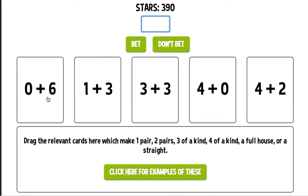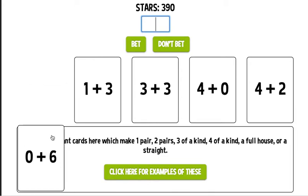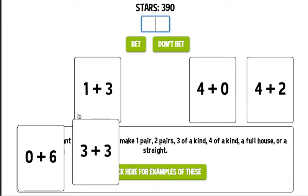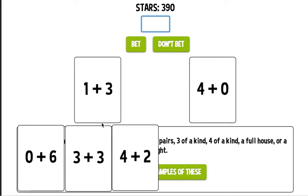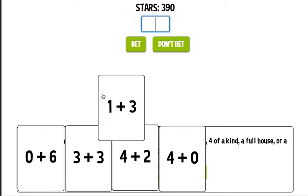So in this case look at this. I have two pairs. Actually I have a full house here. I have 6, 6, and 6 and I have 4 and 4.